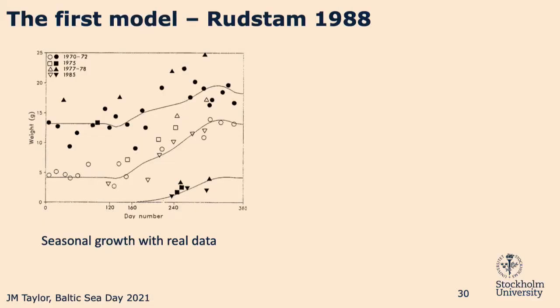What does this model look like in application? This is an example of one year of growth using the first bioenergetics model. The solid lines represent different ages of fish — age 0, age 1, age 2. The different symbols are actual data observed in the field. You can see that this first model matches the observed data pretty well — it's a good tool for modeling growth.